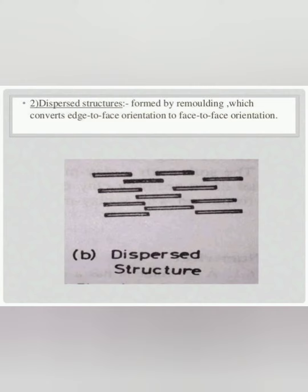In dispersed structure, there is face-to-face orientation and net repulsion between the particles. It is not stable and has less strength as compared to the flocculated structure.